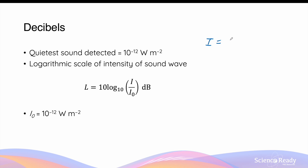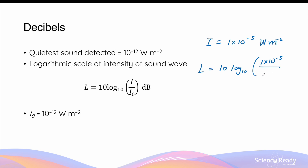For example, if we have a sound with an intensity of 1 × 10⁻⁵ watts per meter squared, we put this into the equation: 10 times log base 10 of (1 × 10⁻⁵) divided by the reference intensity 10⁻¹², which is the smallest intensity detectable by the human ear. This gives a value of 70 decibels.